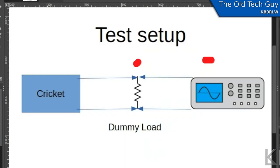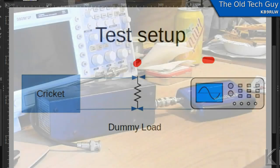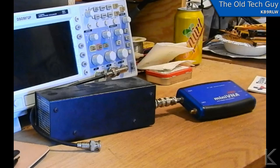So that's the test setup. First things first, I need to measure my dummy load. So this is my test setup for measuring the dummy load. I have my MFJ dry dummy load and I've hooked my mini VNA up to it to scan it and measure its resistance.